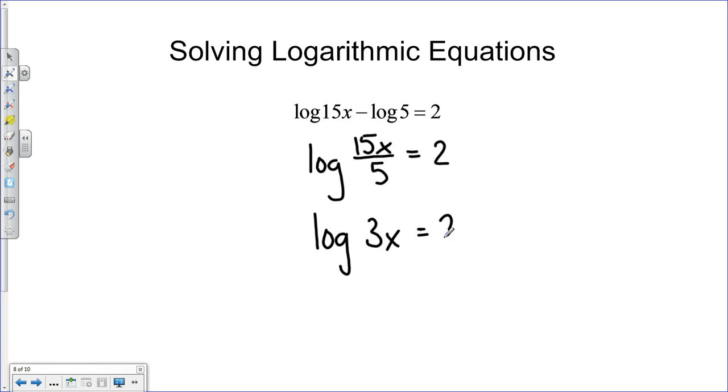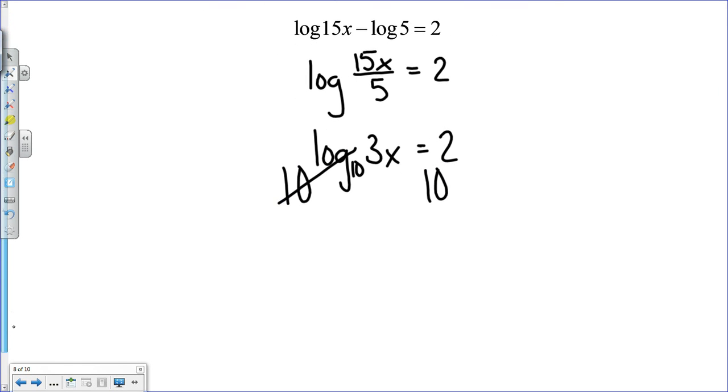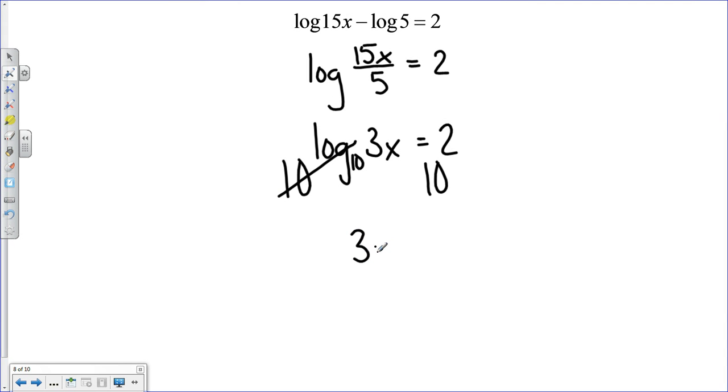Now remember, whenever you don't see a base on this logarithm, it's what's referred to as a common logarithm. It's a log base 10. So to get rid of that, I make it a power on 10. I have to do that to the other side as well. The 10 and the log base 10 will go away. So now I have 3x equals 100 because 10 squared is 100. Divide by the 3, I get x equals, and I'm going to leave it as a fraction, 100 over 3. There we go. There's my answer.